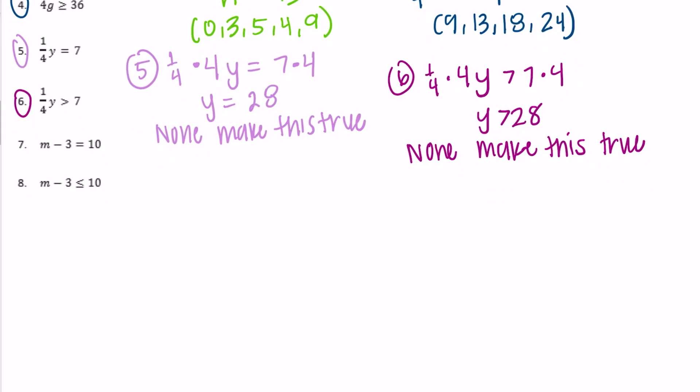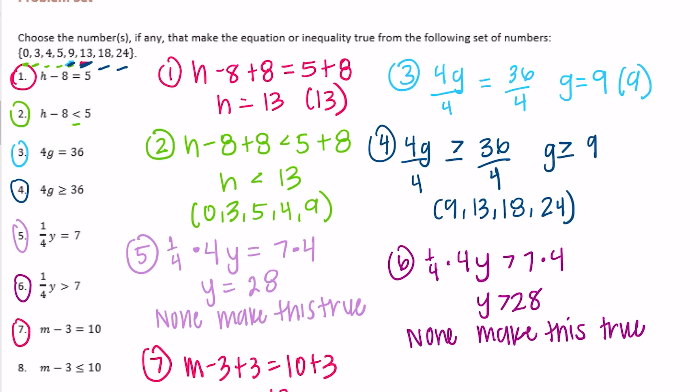Number 7: m minus 3 plus 3 equals 10 plus 3, so m would equal 13. Do we have m equals 13? We do. So the only thing that makes this true is 13.